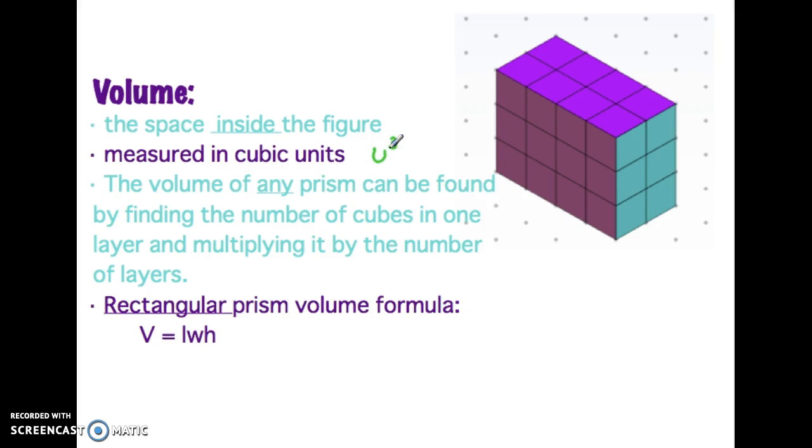The volume of every single prism can be found by finding the number of cubes in one layer. For instance, you could look at this one on the right and say, well, in the top layer I can kind of see that there are eight cubes, and then you just need to multiply it by the number of layers. In this case there are three layers, and we could do eight times three to give us a volume of 24, and I would label that cubic units.